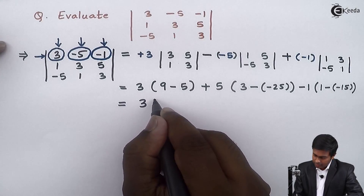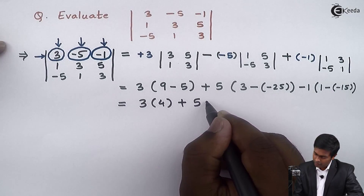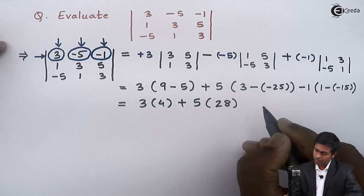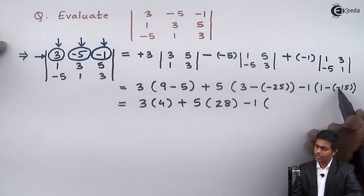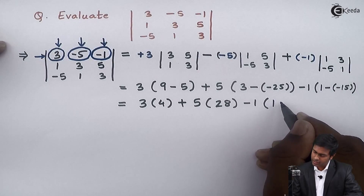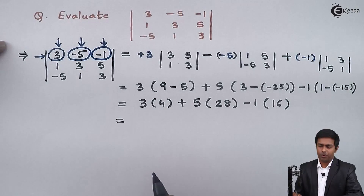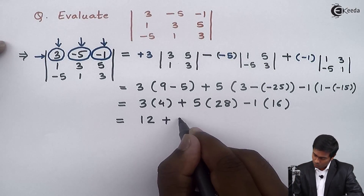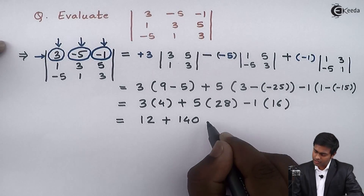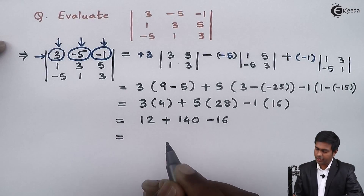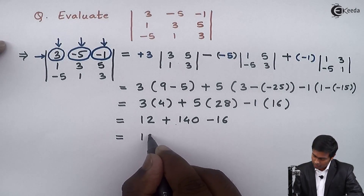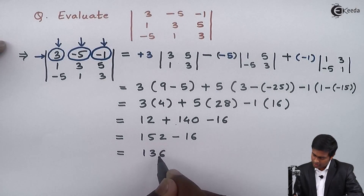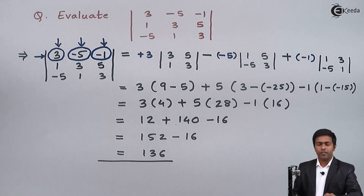Simplifying: 9 − 5 = 4, so 3 × 4 = 12. Then 3 + 25 = 28, so 5 × 28 = 140. Then 1 + 15 = 16, so −1 × 16 = −16. Adding: 12 + 140 = 152, and 152 − 16 = 136. So the value of the given determinant is 136. Thank you.